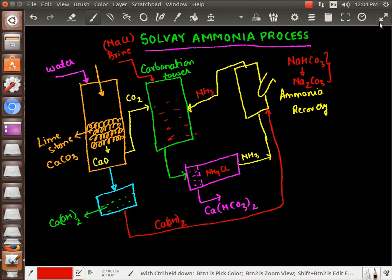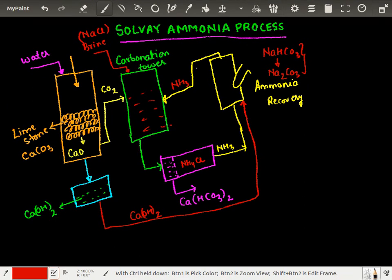On the left hand side, you can see a furnace where limestone is heated at a high temperature. We end up getting calcium oxide and carbon dioxide.